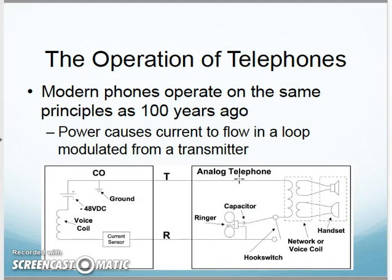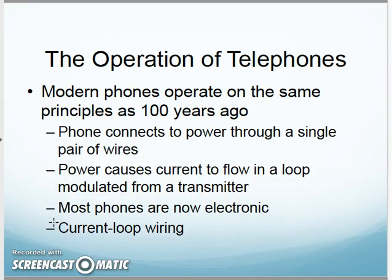If we zoom ahead to today, if you have a traditional landline phone in your house, that phone is powered from the phone company. If the electricity in your house goes out, your phone will still function and operate—a traditional landline hanging-on-the-wall phone will still work because it's being powered from the phone company at 48 volts DC. As you pick it up and talk, your voice modulates a signal across to the phone company. Most phones today are electronic rather than the typical analog phone, but it still does current loop wiring where it powers the phone for you.